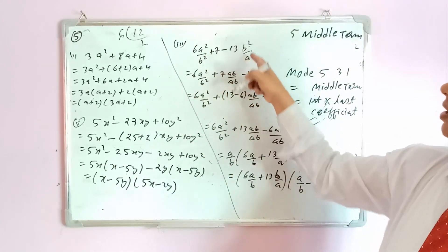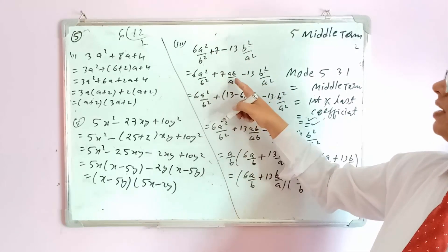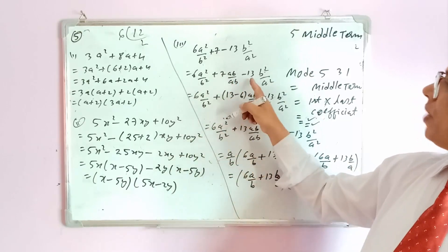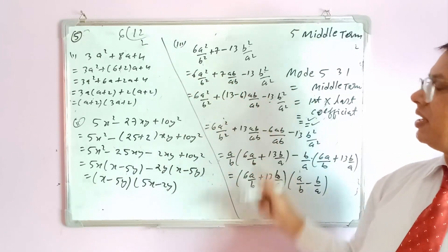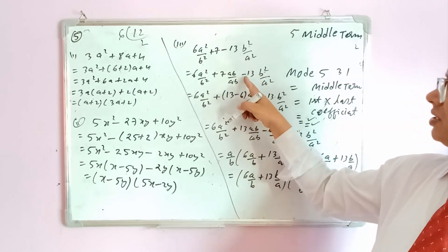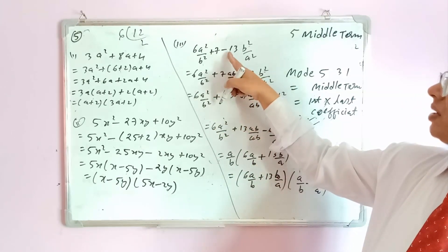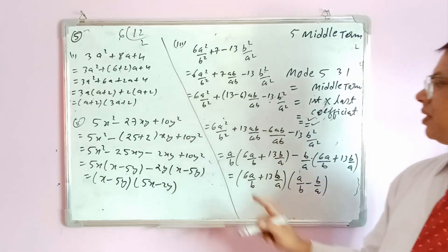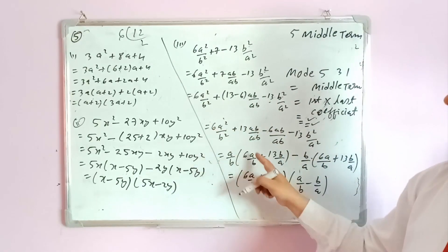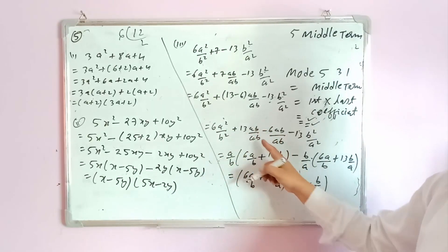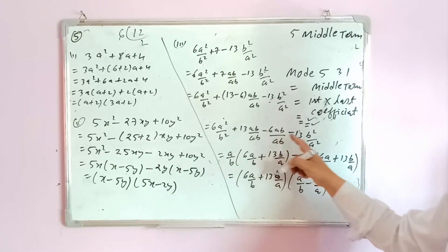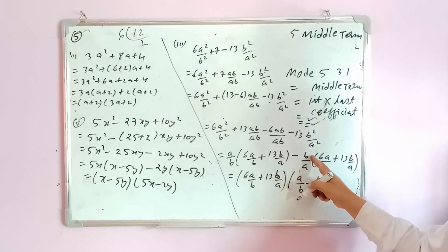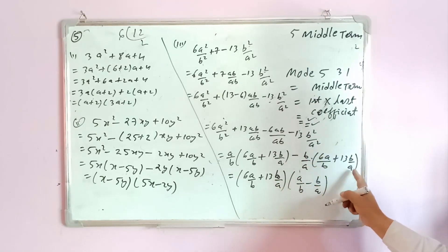Third question in rule 5 involves terms in a²b² form: 6a²b²+7ab−13. Since terms are in a²,b² form, we add and subtract 'ab' terms. Using calculator Mode 5 3 1 = then +7 = then −13×6 =, we get 13 and 6. Since the sign is minus, 13−6=7, the middle term. So split 7ab into 13ab−6ab. Group: 6a²b²+13ab from first pair and −6ab−13 from second. Take ab common from first: ab(6ab+13); take −1 common from second: −1(6ab+13). Common factor is (6ab+13), giving (6ab+13)(ab−1).